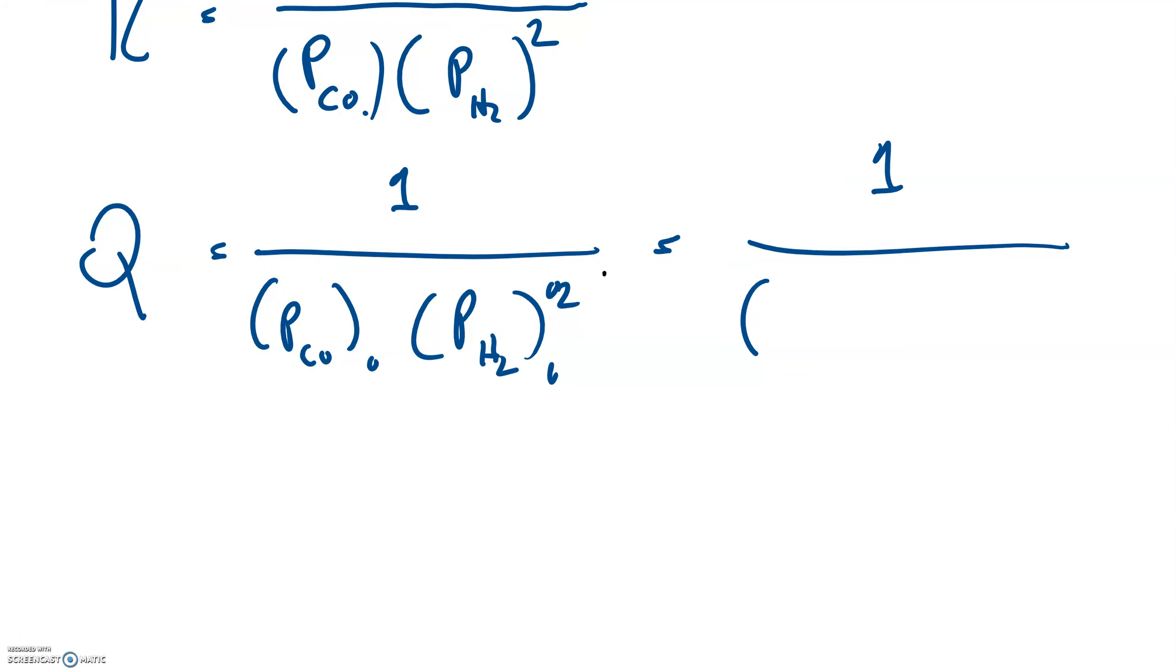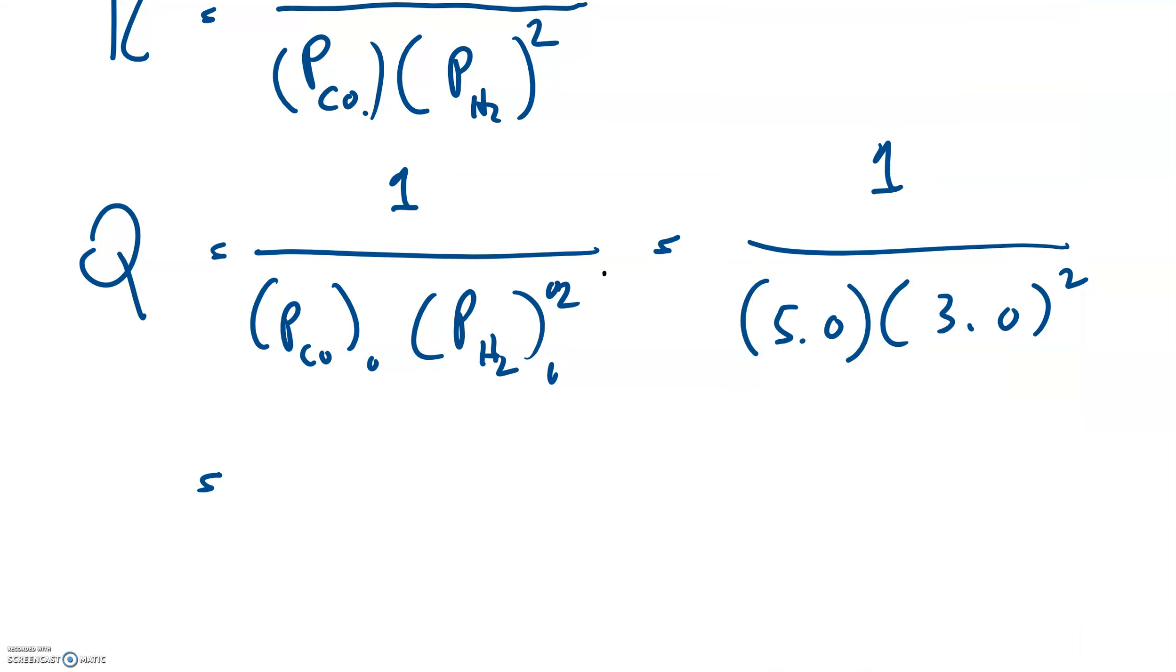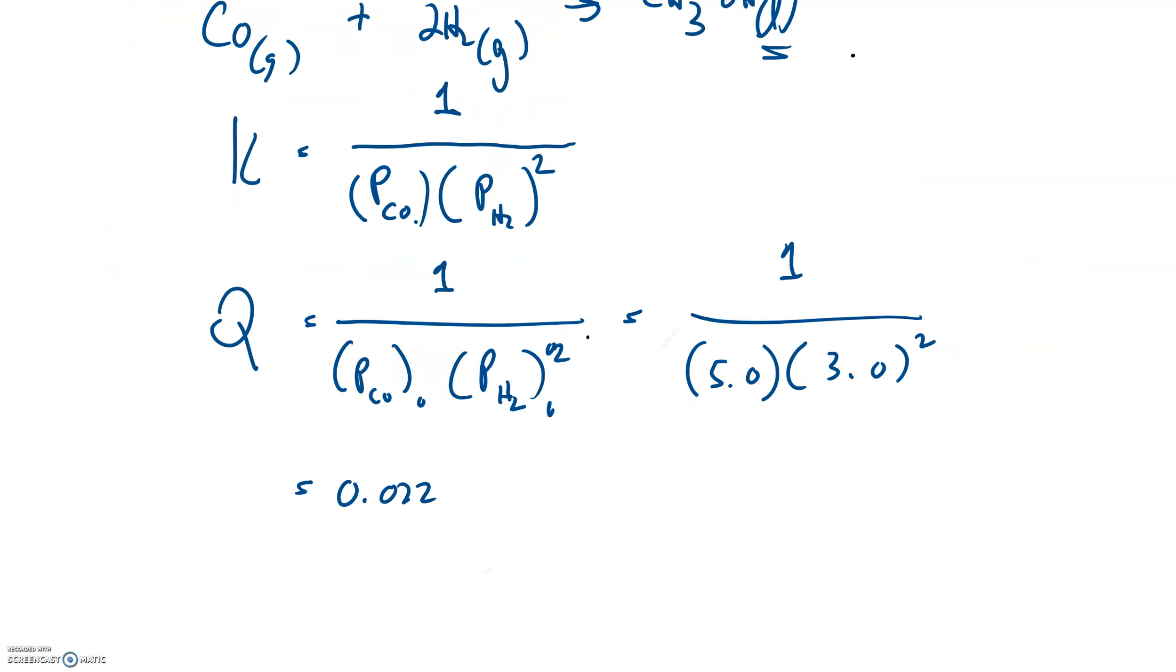That's a 1. Partial pressure of carbon dioxide gas is 5. We're not going to worry about the units. Partial pressure of hydrogen is 3. We're going to square that. Busting out our calculator, I'm just going to take out my handy online one right here. We'll take 1 divided by the product of 5 times 3 squared. We've got a bunch of 2's. Here is our position for Q. A bunch of 2 is 0.022. There's no units.